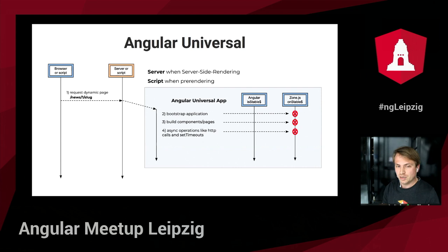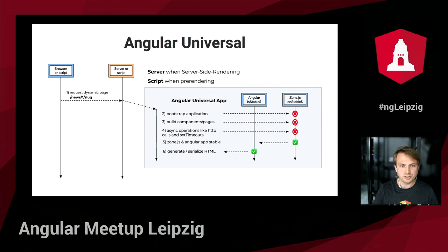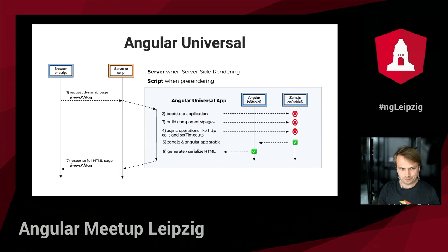Async operations like HTTP calls and timeouts make the application unstable. As soon as all those operations are done and the zone becomes stable, the Angular app is informed and also becomes stable. We can then serialize the HTML using jsdom and the Angular Universal setup returns the full HTML to the Node.js server, which returns it to the client.